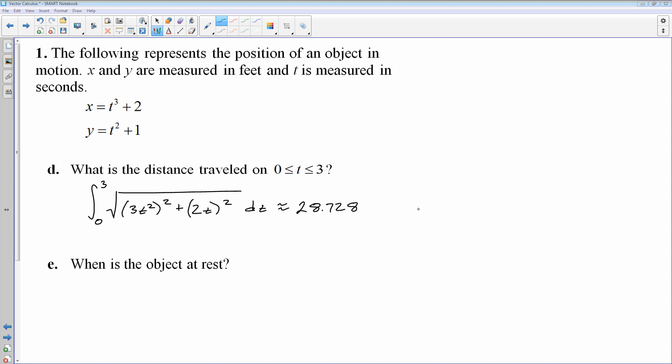And the length of the curve from 0 to 3 is the distance traveled, and we will simply throw that in the calculator to get an answer. I punched it in. I got 28.728. And remember, distance is measured in feet for this problem. So the total distance traveled is 28.728 feet.